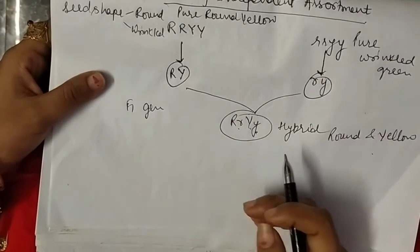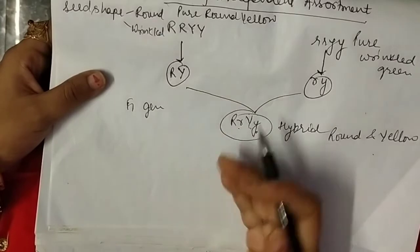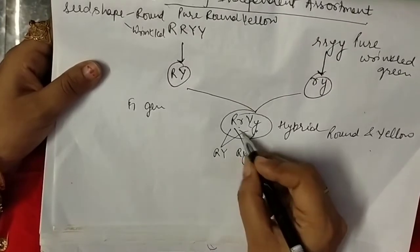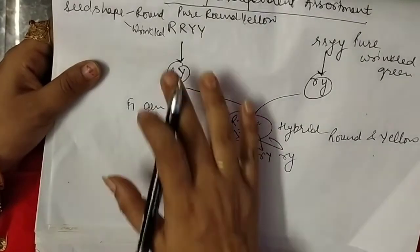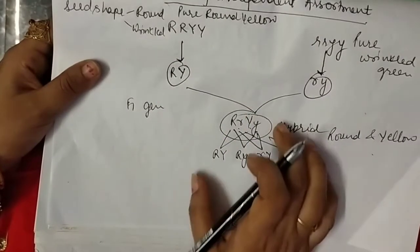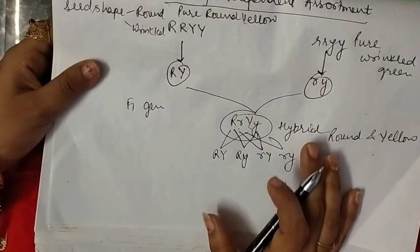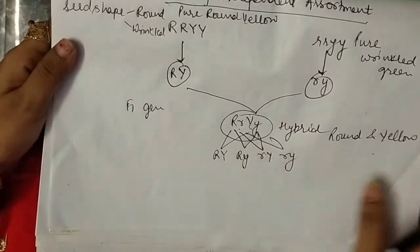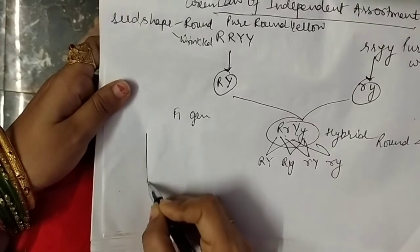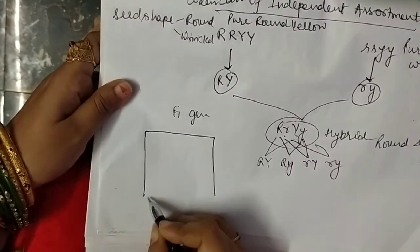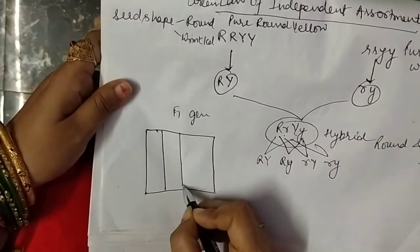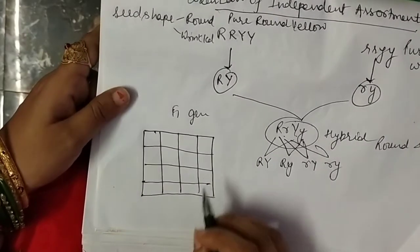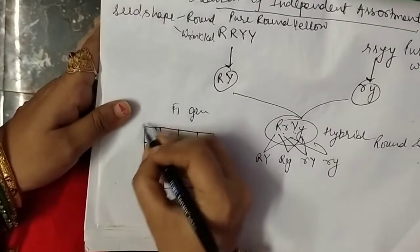To determine the second or F2 generation, we first make the genes into pairs and then perform self-pollination. For this we draw a Punnett square — a 16-column square structure, also called a checkerboard or Punnett square. The four types of gametes from the F1 plant are RY, Ry, rY, and ry, arranged along both axes of the 16-cell Punnett square for self-pollination.